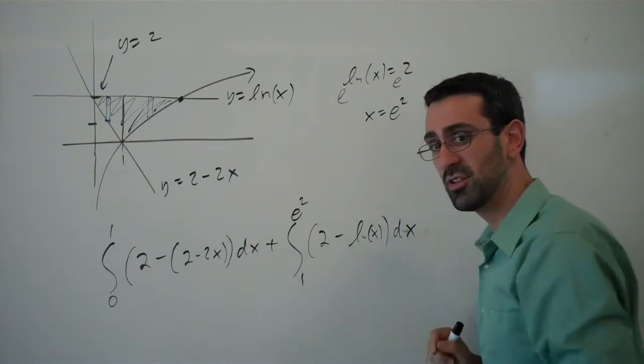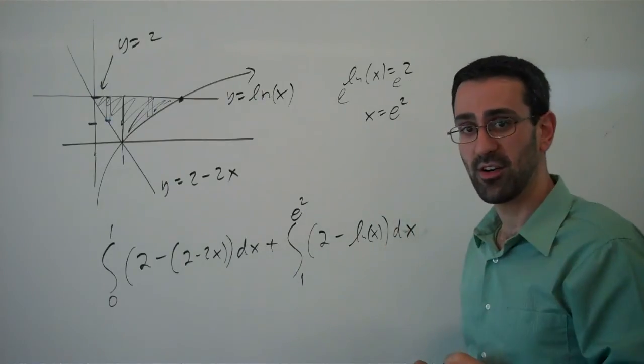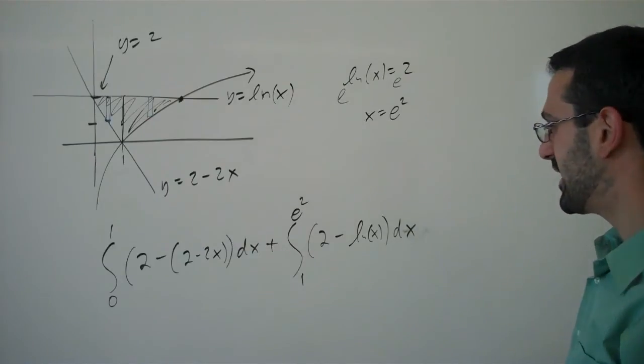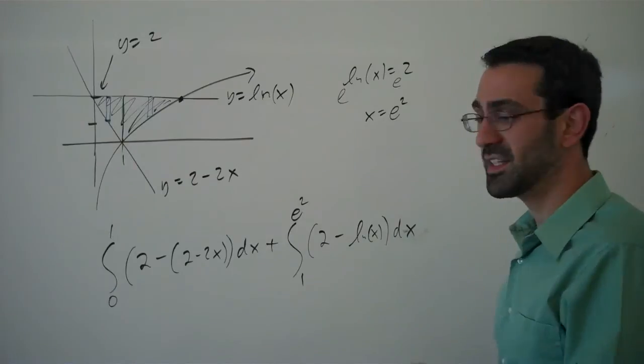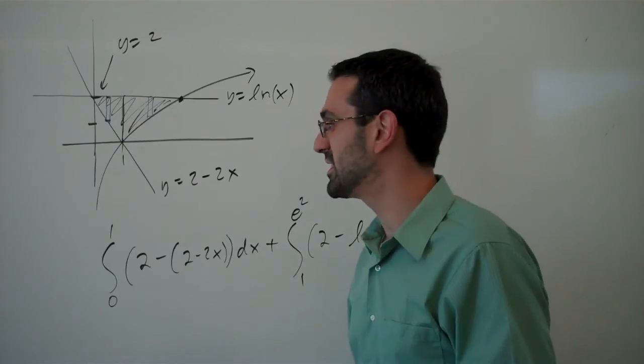And this integral would let me find that area doing vertical slices. Looking at that, it doesn't look like a lot of fun to integrate though. So let's see what would happen if we tried slicing horizontally instead.